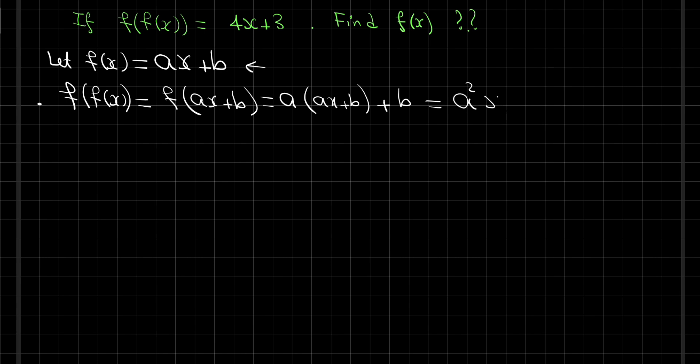Which equals a squared x plus ab plus b. From the given, we have f of f of x equals 4x plus 3. So now we can write a squared x plus b times the quantity a plus 1 equals 4x plus 3.